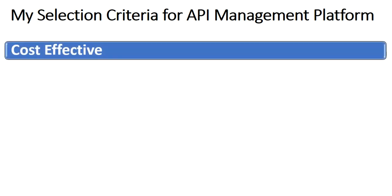The first element in my list of API management selection criteria is cost. Cost effectiveness of any management platform or any type of software used in an organization plays a very important role, as no company wants to spend a huge sum of money on something which does not return on that investment sufficiently. So whenever you have to choose an API management platform, you need to look into what costs are associated with it.